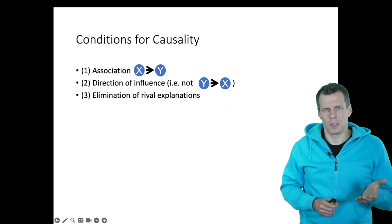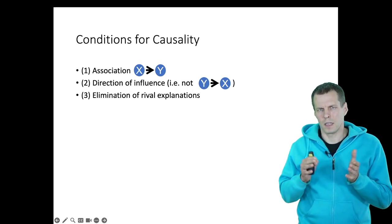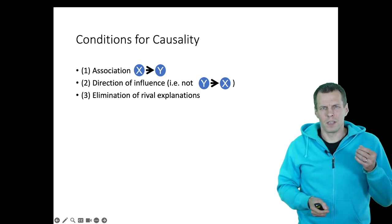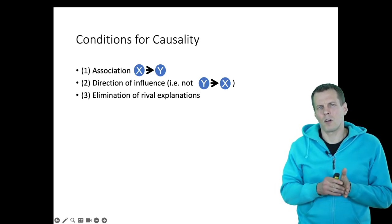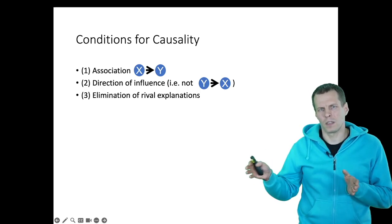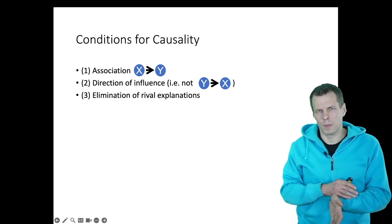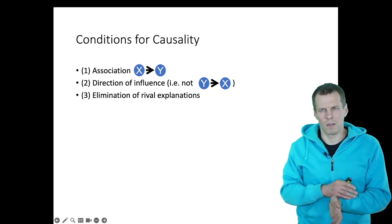First is association: is there a correlation between profits and gender? In this case the answer is yes. The second question is temporal order: which one comes first — do gender differences cause profit differences, or do profit differences cause gender differences? Third is the elimination of rival explanations, such as industry effects or company size effects.